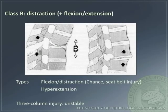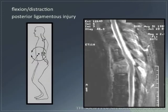Class B, distraction with flexion-extension, may be divided into flexion-distraction injuries — for example, chance or seatbelt injury — and hyperextension injuries. These injuries involve all three columns and are by definition unstable. Here is a diagram and radiographic image demonstrating the mechanism of injury for flexion distraction and posterior ligamentous injury.